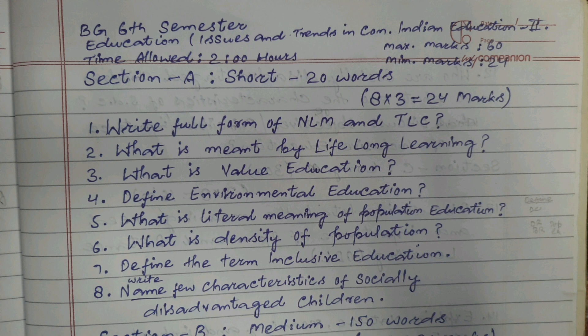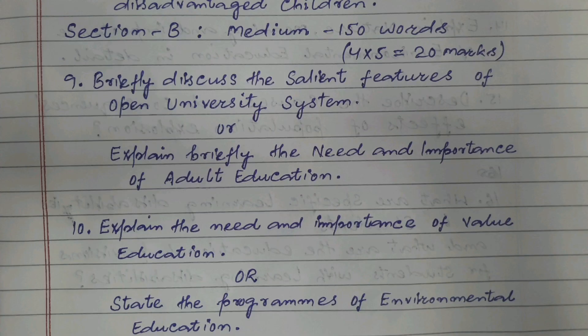Attempt all questions from Section A and B, and only two questions from Section C. Section A — Short Answer Type Questions, to be answered in 20 words. 8 × 3 = 24 marks. Question 1: Write the full form of NLM and TLC. Question 2: What is meant by lifelong learning? Question 3: What is value education? Question 4: Define environmental education. Question 5: What is the literal meaning of population education? Question 6: What is density of population? Question 7: Define the term inclusive education. Question 8: Write a few characteristics of socially disadvantaged children.